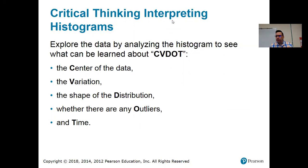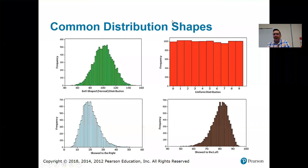All right. That brings us to some common distribution shapes. So, you see here four different histograms. It looks like these are very large data sets.